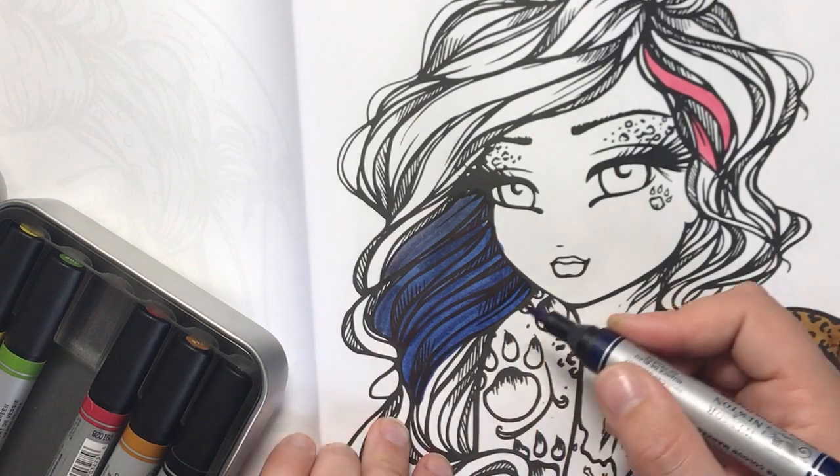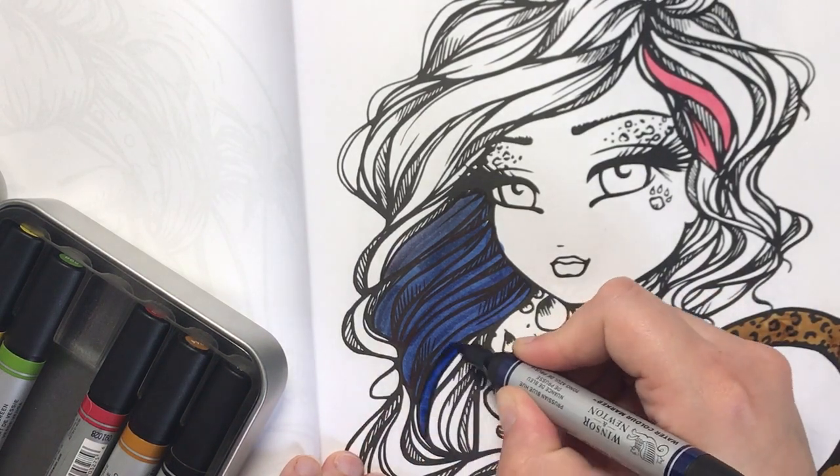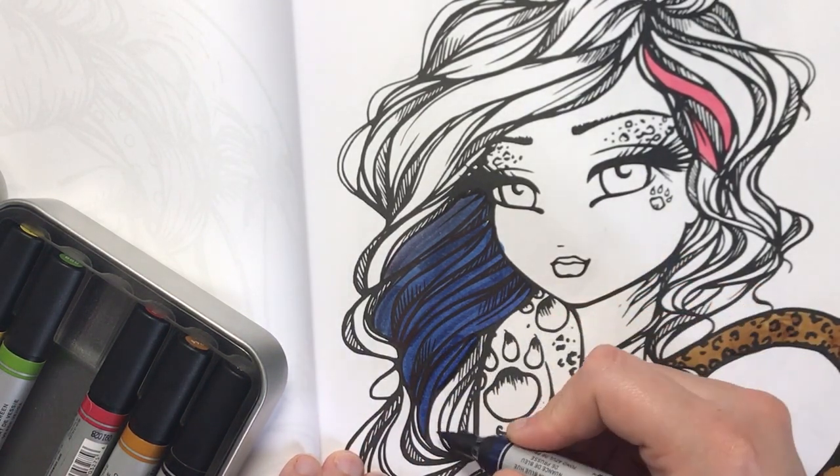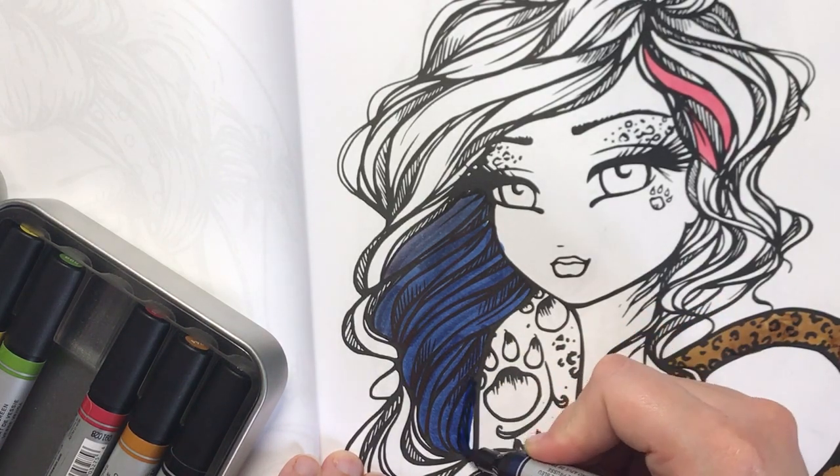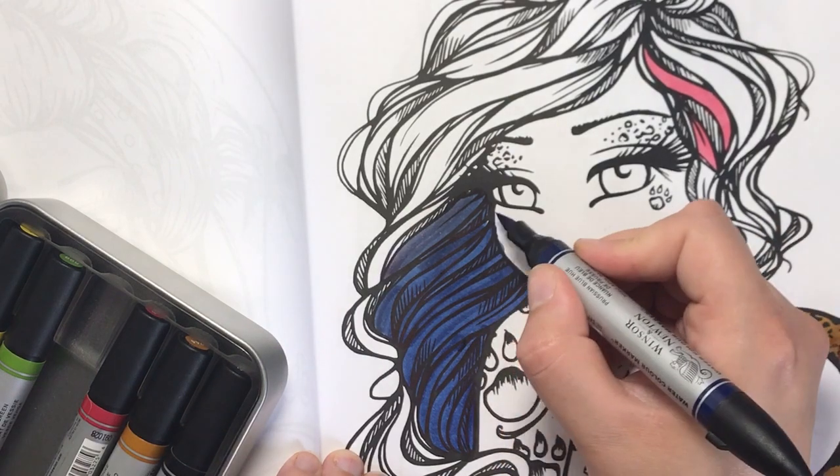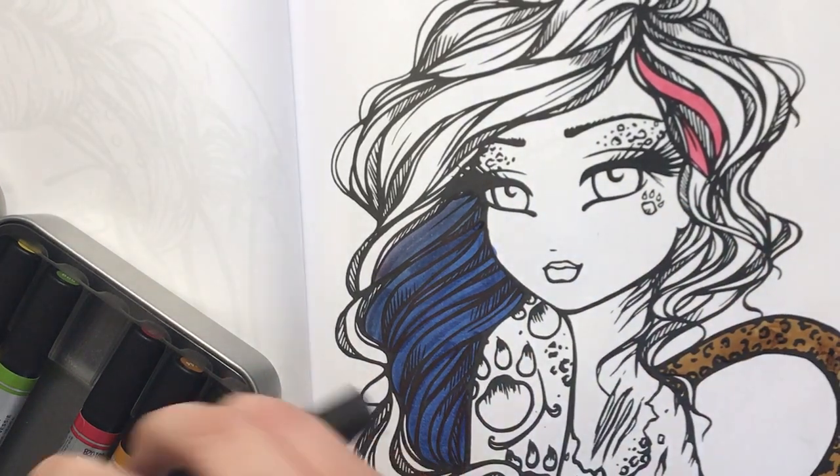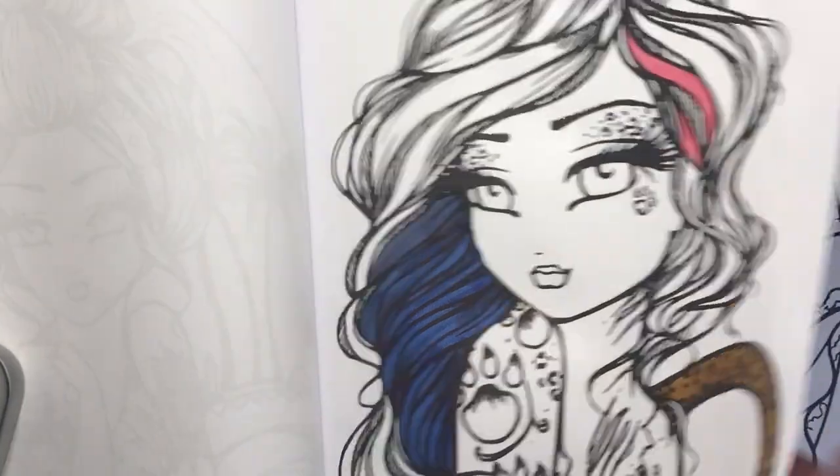This book is Tattoo Darlings by Hannah Lynn. It's one that I've been colouring and using in my demos quite a lot lately, and it is printed by Amazon so it's got that thin paper.